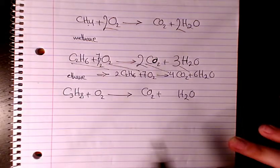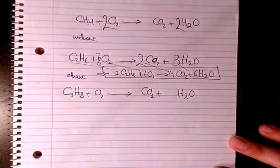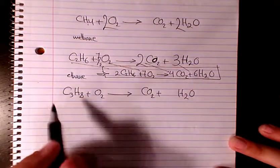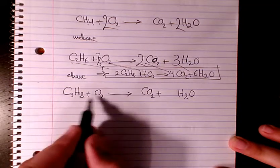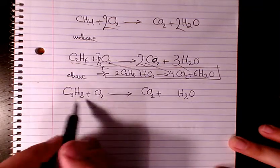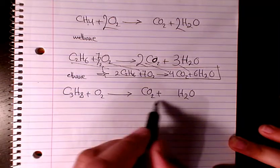So that's going to be the balanced form of ethane combustion. Now propane. For propane, again, the reaction is going to be the same thing. If you have complete combustion, it produces carbon dioxide and water.